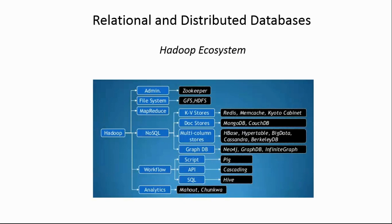Bigtable was the original distributed column store developed by Google, and many of its variants like Hypertable, Cassandra, and HBase all fit in that category.